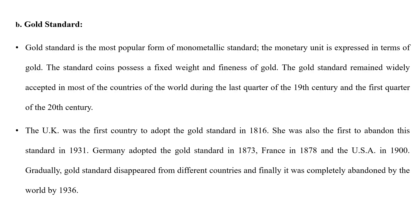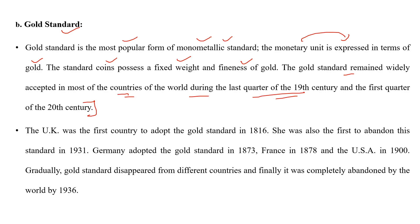जो दूसरा standard था वो gold standard था। यह बहुत ज़ादा popular monometallic standard था। यहाँ पर जो monetary unit express की जाती थी वो gold के terms में express की जाती थी, और जो standard coins बनाए जाते थे उनकी fix weight होती थी — for example, 5 gram का सोने का सिक्का। उस ज़माने में अलग-अलग देशों ने अलग-अलग weight fix की थी। यह most of the world में 19वीं शताब्दी के आखरी quarter और 20वीं शताब्दी के शुरुआती 25 सालों में बहुत ज़ादा famous और widely accepted था।